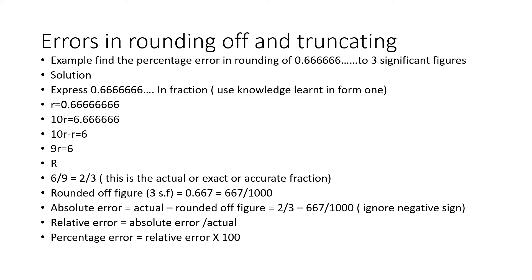Let's look at how you find the errors in rounding off and also in truncating. I'll focus on rounding off because truncation follows a similar method. Find the percentage error in rounding off 0.6 recurring to three significant figures. First, express 0.6 recurring as a fraction. Let r equal 0.666 recurring.